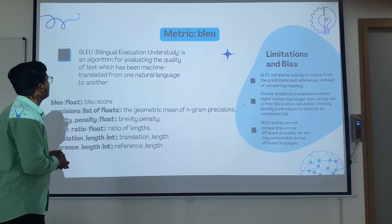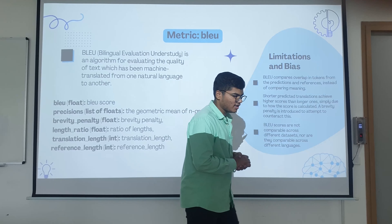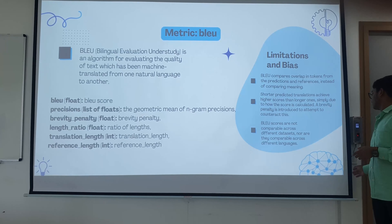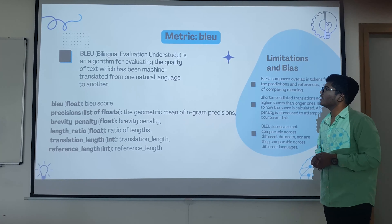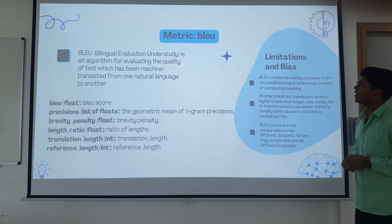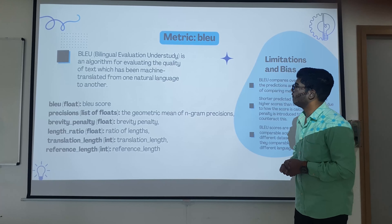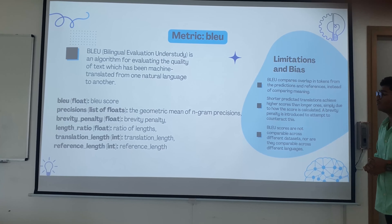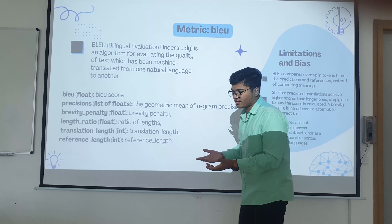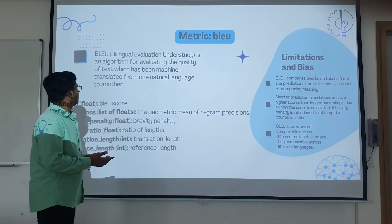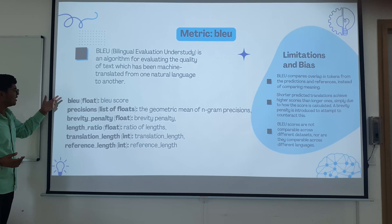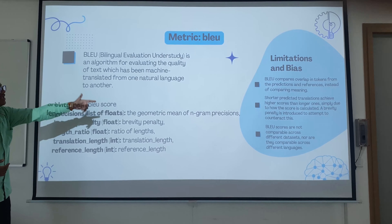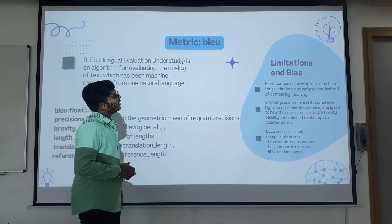We also have different metrics to find the score or accuracy of a model. The most common is the BLEU score — Bilingual Evaluation Understudy — which is an algorithm for evaluating the quality of text that has been machine-translated from one natural language to another. To compute BLEU score, we use parameters like precision, brevity penalty, length ratio, translation length, and reference length.